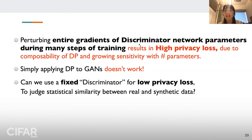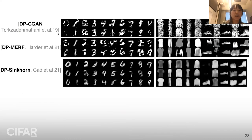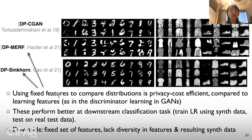Many people realized: why not use a fixed discriminator? In other words, use a fixed set of features not learned from the data to judge the similarity between real and synthetic data. If these features are not learned from data, there is no privacy loss in that step — you only pay the privacy budget for training the generator. Papers such as DP-MURE and DP-SYNCON use this idea. On the other hand, DP-CGAN is a conditional GAN that uses DP-SGD to ensure privacy, adding noise to discriminator gradients in every training step.